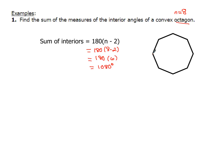Looking at the figure, we can count the triangles inside: 1, 2, 3, 4, 5, 6. Notice the pattern — the number of triangles on the inside matches (n minus 2). There are six triangles at 180 degrees apiece, which gives us a product of 1,080 degrees.